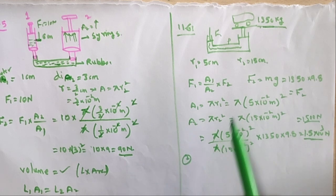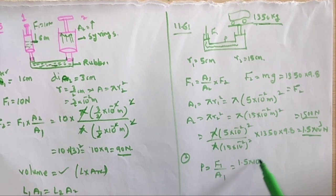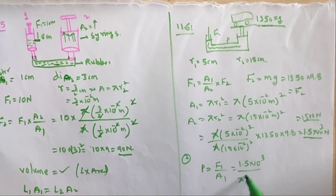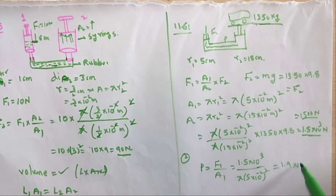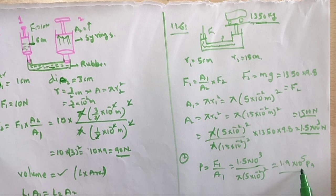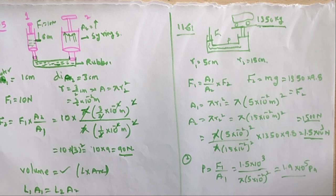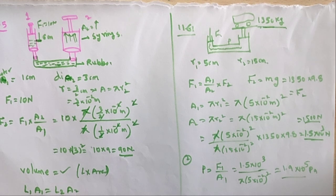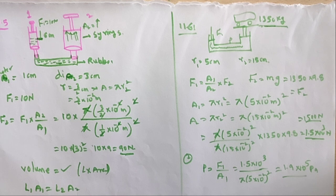Second part: What air pressure is necessary? P = F1/A1 = (1.5 × 10³) / (π × (5 × 10⁻² m)²) ≈ 1.9 × 10⁵ Pa, approximately 2 atmospheres. This is the air pressure that produces the required force. This video covered hydraulic lift, hydraulic brakes, and worked problems on mechanical properties of fluids. Thank you.